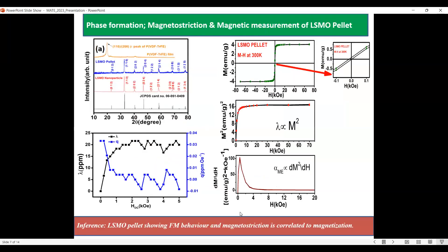Moving to the results: we have shown the XRD patterns of the PVDF-TrFE film as well as the LSMO pellets and nanoparticles. The β-phase peaks of PVDF-TrFE confirm that the phase has been formed in its beta phase. From the XRD patterns of the LSMO nanoparticles and LSMO pellets, it confirms the phase formation of the LSMO phase.